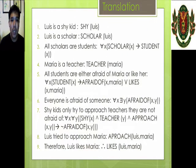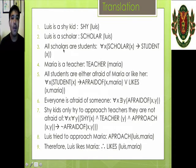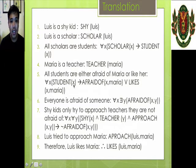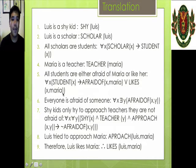Translating the statements: Luis is a shy kid — shy(Luis). Luis is a scholar — scholar(Luis). All scholars are students — for all X, if X is a scholar then X is a student. Maria is a teacher — teacher(Maria). All students are either afraid of Maria or like her — for all X, if X is a student then X is afraid of Maria or X likes Maria. Everyone is afraid of someone — for all X and for some Y, X is afraid of Y.